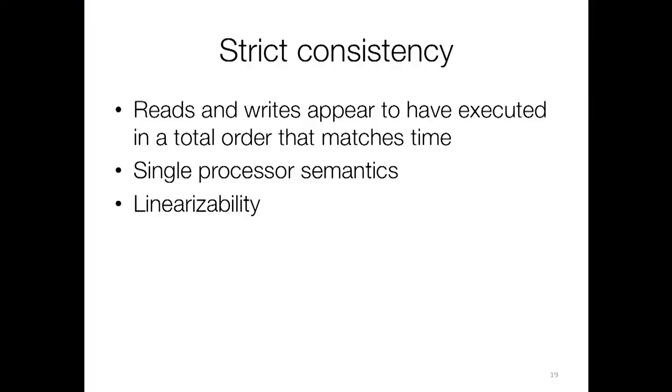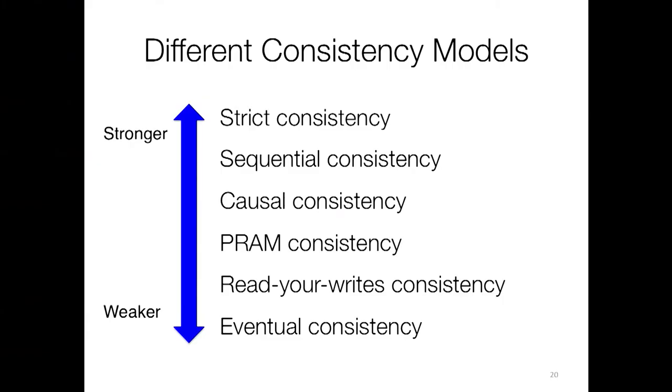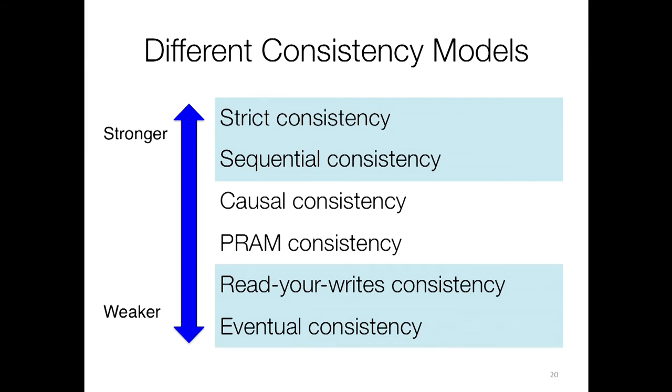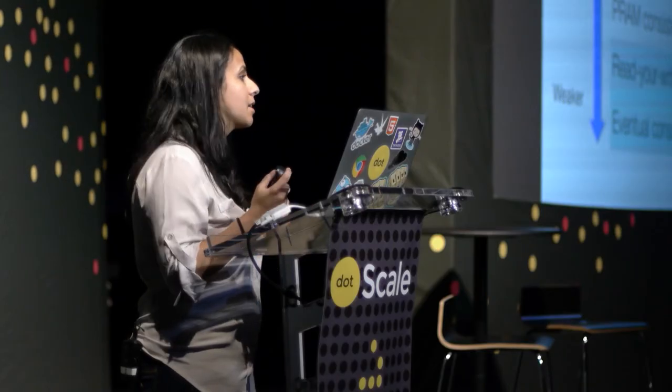On the other end of the spectrum is strict consistency, also known as linearizability. What this means is that reads and writes appear to have executed in a total order that matches time. This is very easy to think about and reason about — it's just like you're running your code on a single processor. Here's a list of a few different consistency models, with strict consistency at the top and eventual consistency at the bottom. The most common ones I've seen in most systems are the top two and the bottom two. There are many other consistency models, and some of them are incomparable — you can't even say one is stronger or weaker than the other.